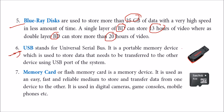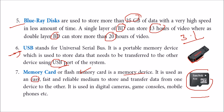USB stands for Universal Serial Bus. We have now reached USB 3.1, giving 1 Gbps and more data transfer speed. It is a portable memory device used to store and transfer data to other devices using the USB port. Memory cards, or flash memory cards, are also memory devices used in digital cameras, game consoles and mobile phones — the easiest, fastest and most reliable medium to store and transfer data between devices.